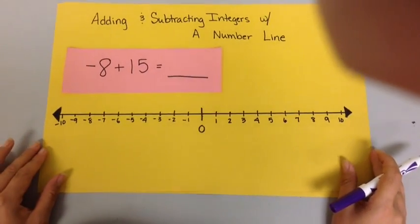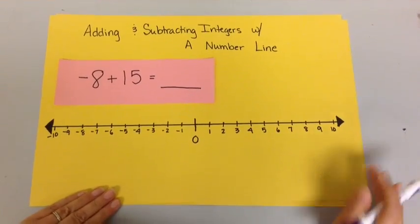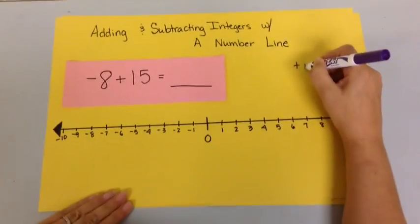So, adding and subtracting integers with a number line is very simple. Addition means that we move to the right.